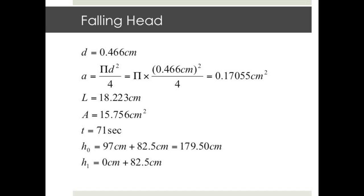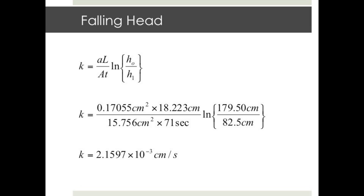Therefore, the area of the manometer equals 0.17055 square centimeters. A hydraulic head dropped from 97 centimeters to 0 centimeters on the meter stick over 71 seconds. The distance from the bottom outlet on the permeameter to the zero reading on the meter stick was found to be 82.5 centimeters, so by adding 82.5 centimeters to both hydraulic head readings, we obtain H0 and H1. By plugging all quantities into the falling head equation, we calculate the coefficient of permeability for our fine grain soil compacted to 89% of its standard Proctor value: 2.16 times 10 to the minus 3 centimeters per second. Recall the coarse grain soil yielded a K value of 0.1424 centimeters per second — the difference is two orders of magnitude, which is typical of fine grain versus coarse grain soil. This concludes the test procedures and data reduction sections for the hydraulic conductivity laboratories.